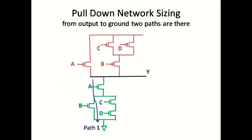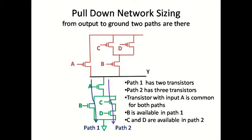Path 1 consists of transistors A and B to ground. Path 2 consists of transistors A, C, and D. Path 1 has two transistors and path 2 has three transistors. Transistor with input A is common to both paths. Path 1 has transistor B and path 2 has transistors C and D.